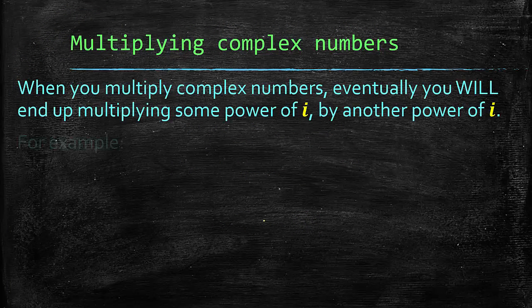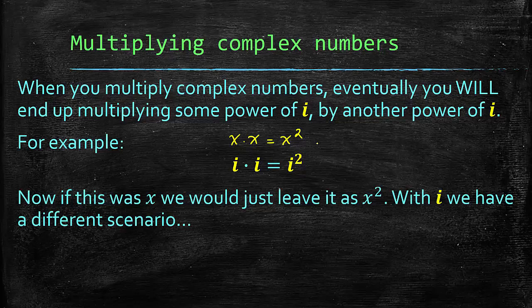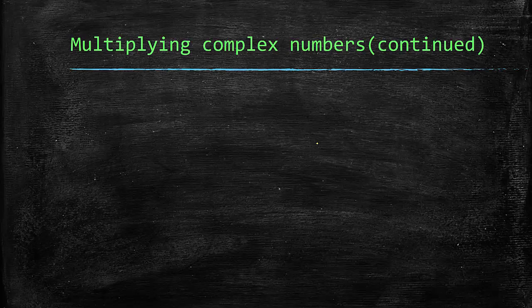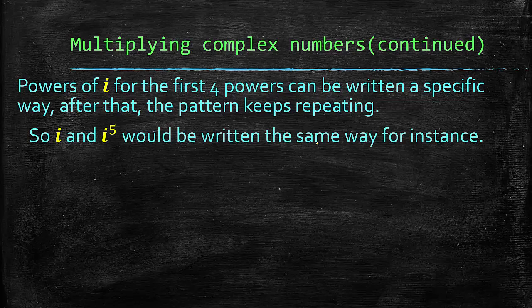Now when you're multiplying complex numbers, eventually you will end up multiplying some power of i by another power of i. For example, if you had i times i, that would be i squared, right? Because we're treating this like as if we had variables, and x times x is x squared. So yes, that's absolutely true. However, unlike as if it were x squared, where we would just leave it as x squared, with i we have kind of a different scenario once we get into the powers of i. The first four powers can be written a specific way, and after that, the pattern keeps repeating. For example, i and i to the 5th, or we could say i to the 1st, because they're the same thing, would be written the same way.